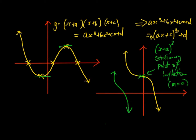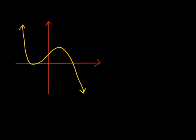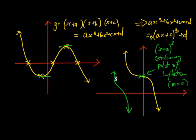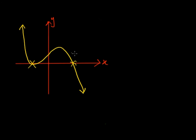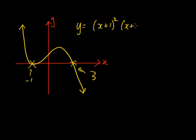The cubic graph can also have a turning point on the x-axis. Always remember to label your axes y and x when graphing. In this shape you have two x-intercepts instead of three. To get this form, if the intercepts are at x = −1 and x = 3, you'd have something like a(x+1)²(x−3), where the squared bracket creates a turning point at that x-intercept.